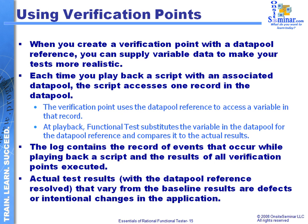That might not be an actual problem — it might just be that we made too much of a change to the application and we need to adjust what our baseline happens to be. For example, if on my screen I had a field called 'Order ID' and it was spelled out as 'Order ID,' and in the next iteration of my application it's changed to 'OID,' I'm going to get an error on the verification point because the names are too different. So it might not always be an actual issue — it might just be some type of application change. But I can use data pools and verification points in conjunction and combine the two of them together.